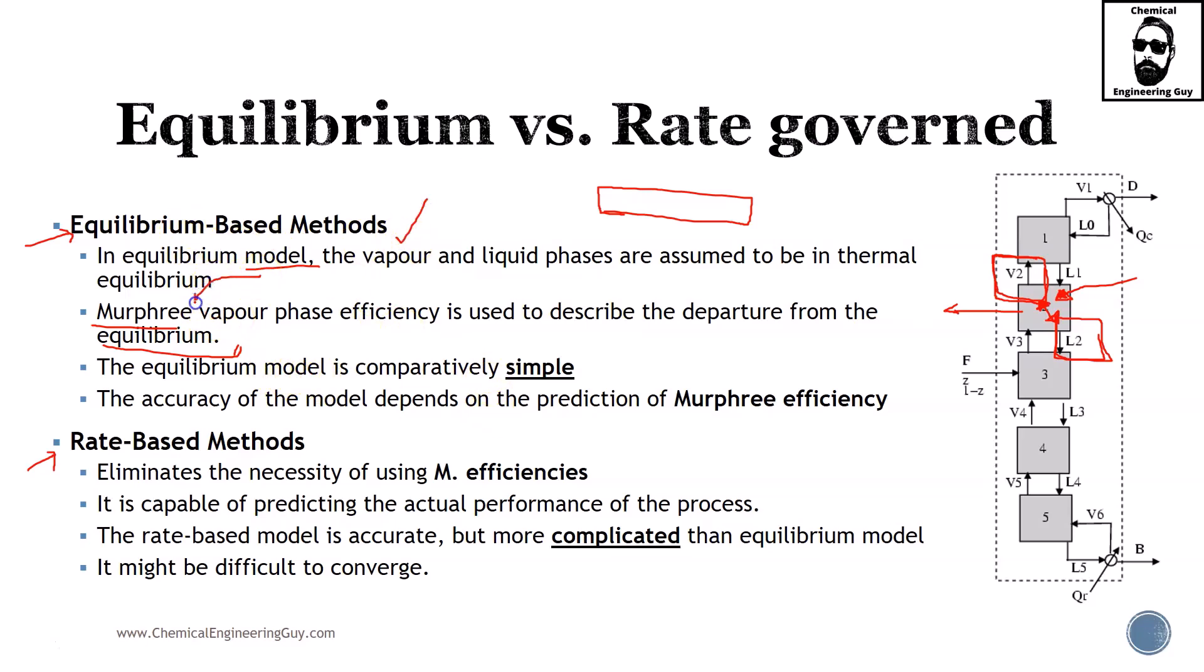In reality, even though this is simple or not that rigorous, it is still a little bit complex to solve by hand. What we do is everything on a matrix and solve the equations all by computer. The accuracy of the model depends on the prediction of the Murphree efficiency, right here. If we know this is deviating and we are using Murphree's efficiency, you can and should assume that Murphree's efficiency should be modeled correctly.